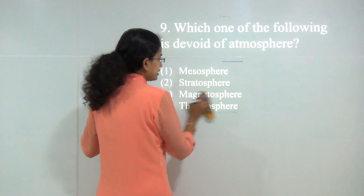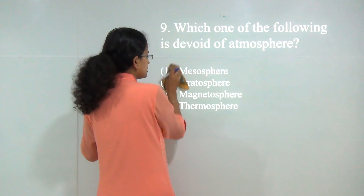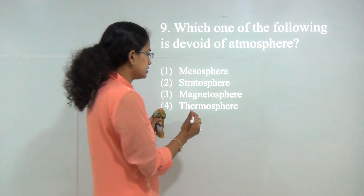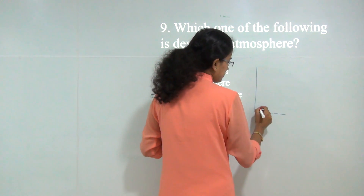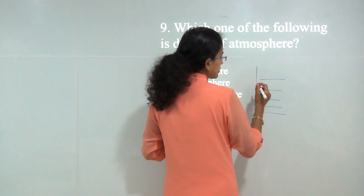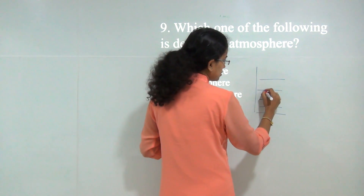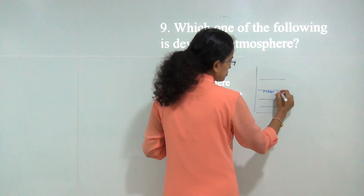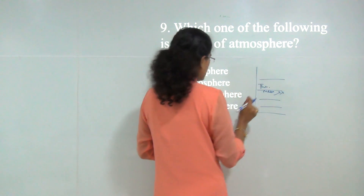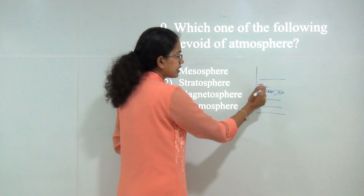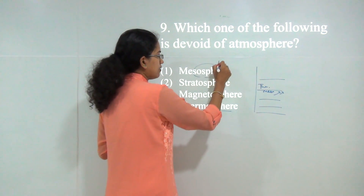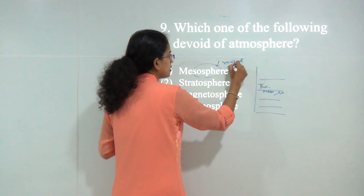Next: which one of the following layers is devoid of atmosphere? We are yet to cover the section on climatology. When we talk about the layers of atmosphere, we have troposphere, stratosphere, mesosphere, thermosphere, and ionosphere. Most shooting stars get burnt up in the mesosphere. When you reach the thermosphere, there is no oxygen and no air. So thermosphere would be the correct answer, while in the mesosphere you have air in a rarefied or very light form.